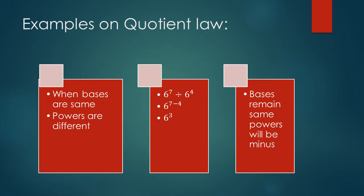Examples on quotient law. When bases are same and powers are different, bases remain same. Powers will be minus. 6 to the power 7 division 6 to the power 4 becomes 6 to the power 3. 7 minus 4 is 3.